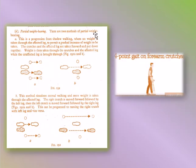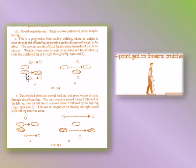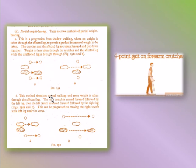There are two methods of partial weight bearing. Method A is a progression from shadow walking: the crutches and affected leg are taken forward and put down together, then weight is taken through the crutches and affected leg while the unaffected leg is brought through. Method B simulates normal walking with more weight on the affected leg: the right crutch moves forward followed by the left leg, then the left crutch moves forward followed by the right leg. This can progress to moving the right crutch with the left leg and vice versa.